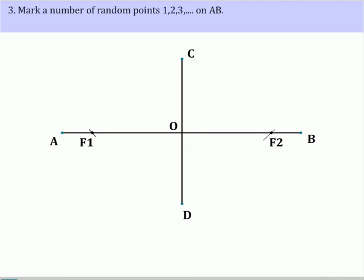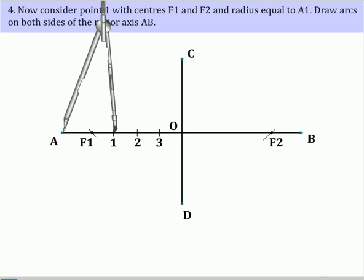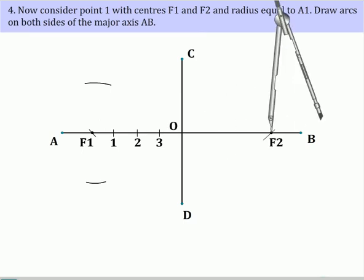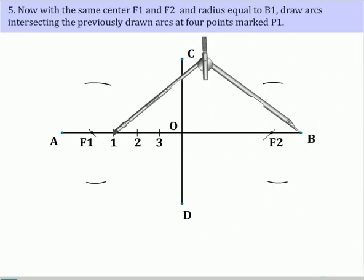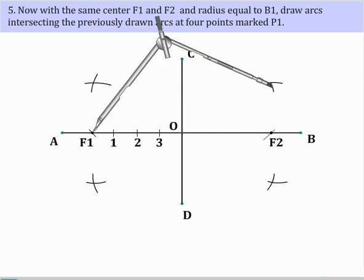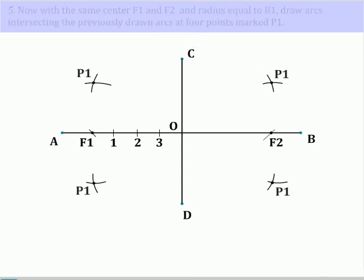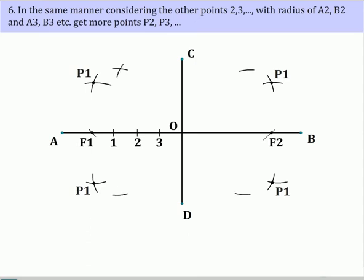Mark a number of random points 1, 2, 3 on AB. Now consider point 1. With centers F1 and F2 and radius equal to A1 draw arcs on both sides of the major axis AB. Now with the same centers F1 and F2 and radius equal to B1 draw arcs intersecting the previously drawn arcs at four points. In the same manner considering the other points 2, 3 etc., with radius A2, B2 and A3, B3 etc., get more points P2, P3 etc.